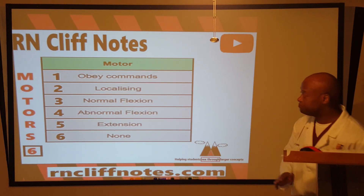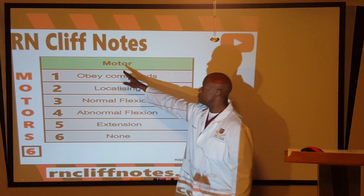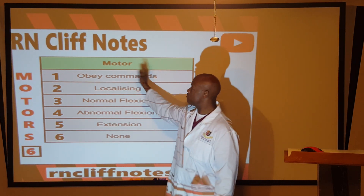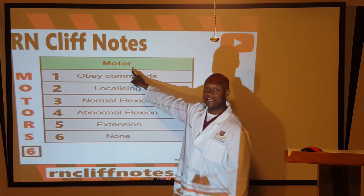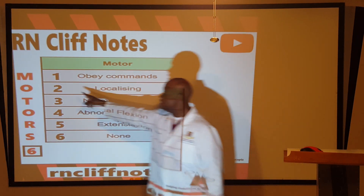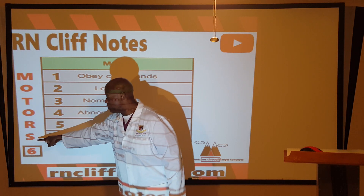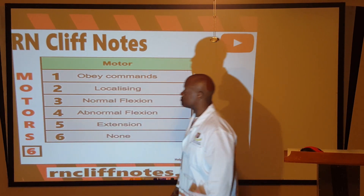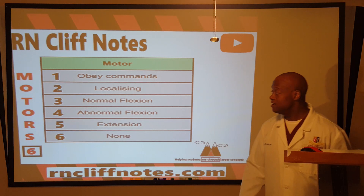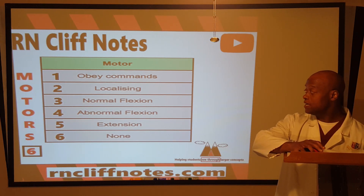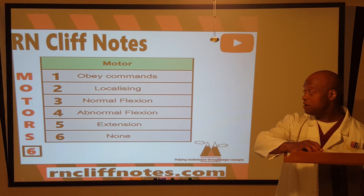Same thing with motor ability. Instead of 'motor ability' or 'motor functioning,' we simply add the letter S again — M-O-T-O-R-S — and count: one, two, three, four, five, six. So the maximum score for motor ability is six, ranging from one through six.